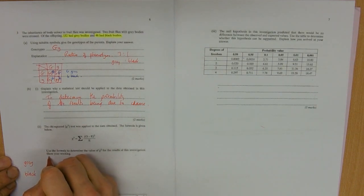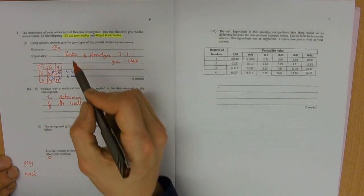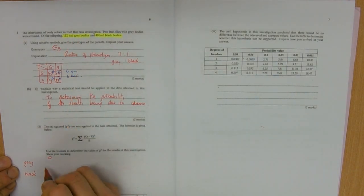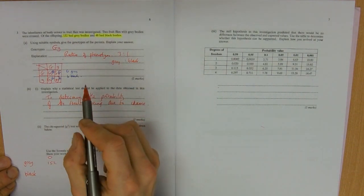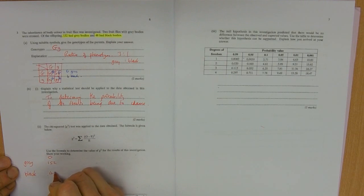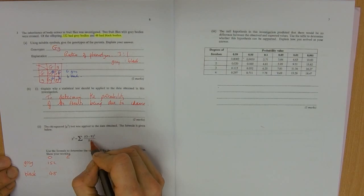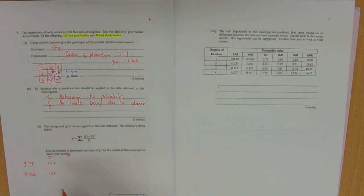How many did we observe? We had 152 grey and 48 black. How many would we expect? What's our total? 152 plus 48 is 200.